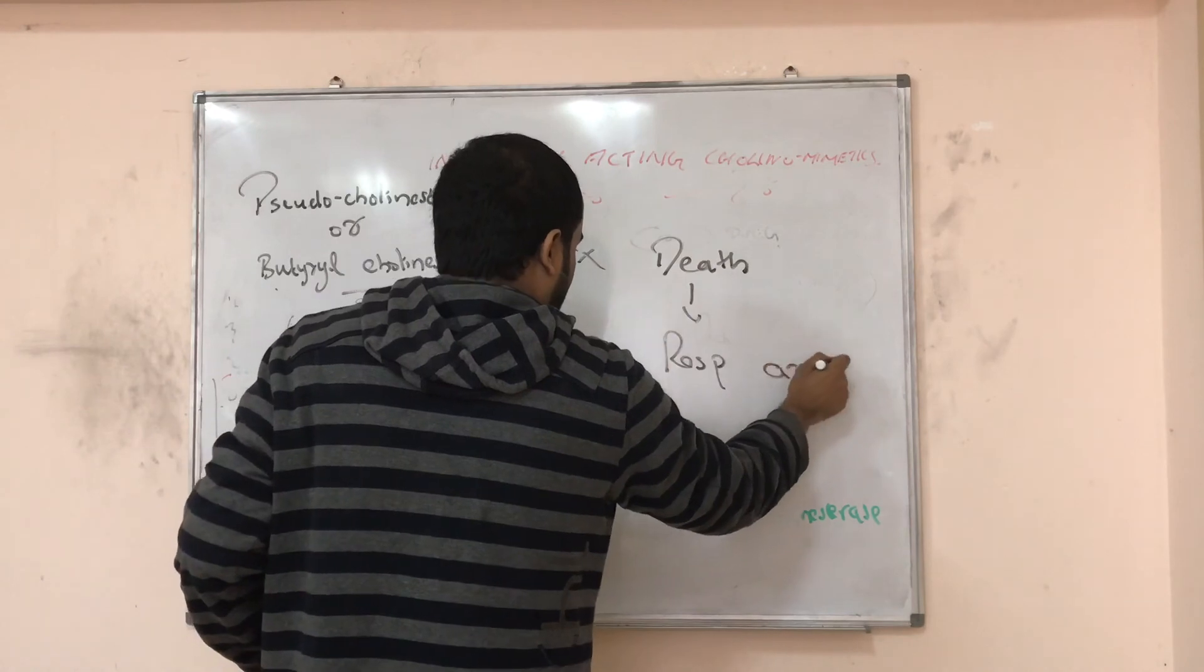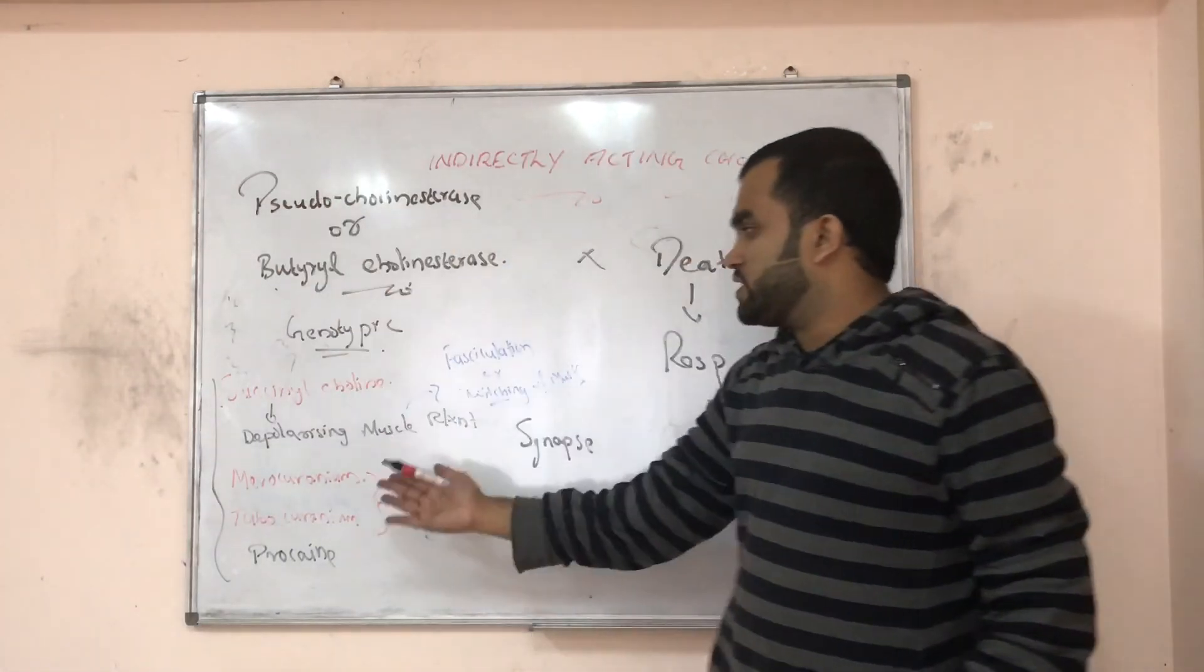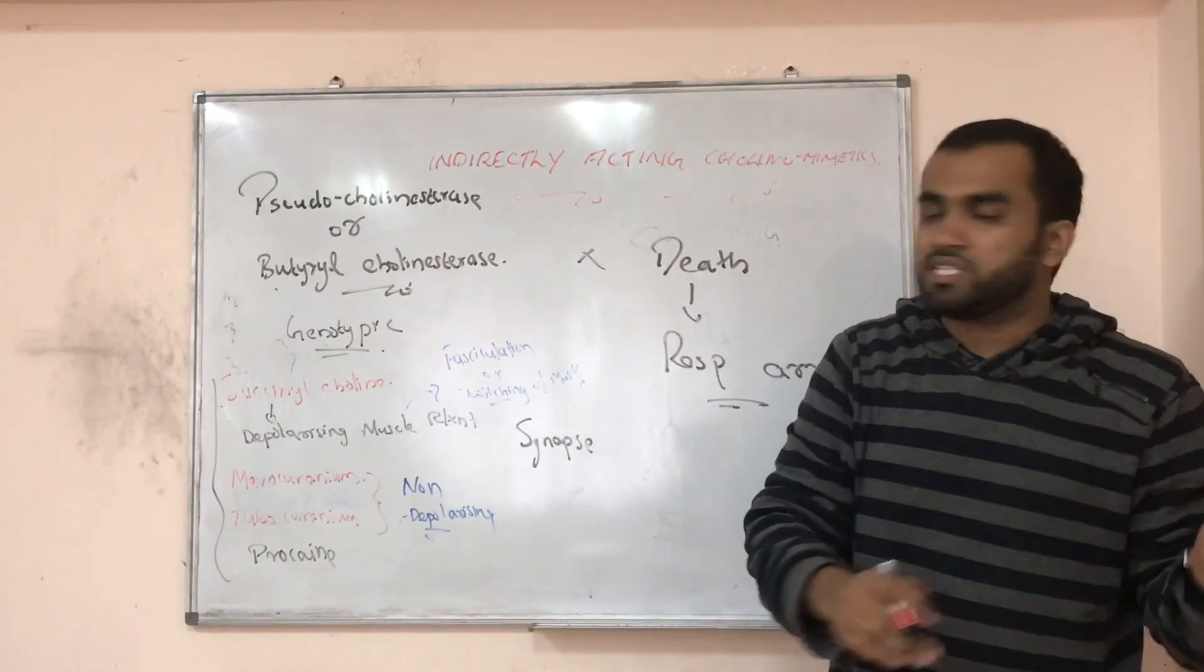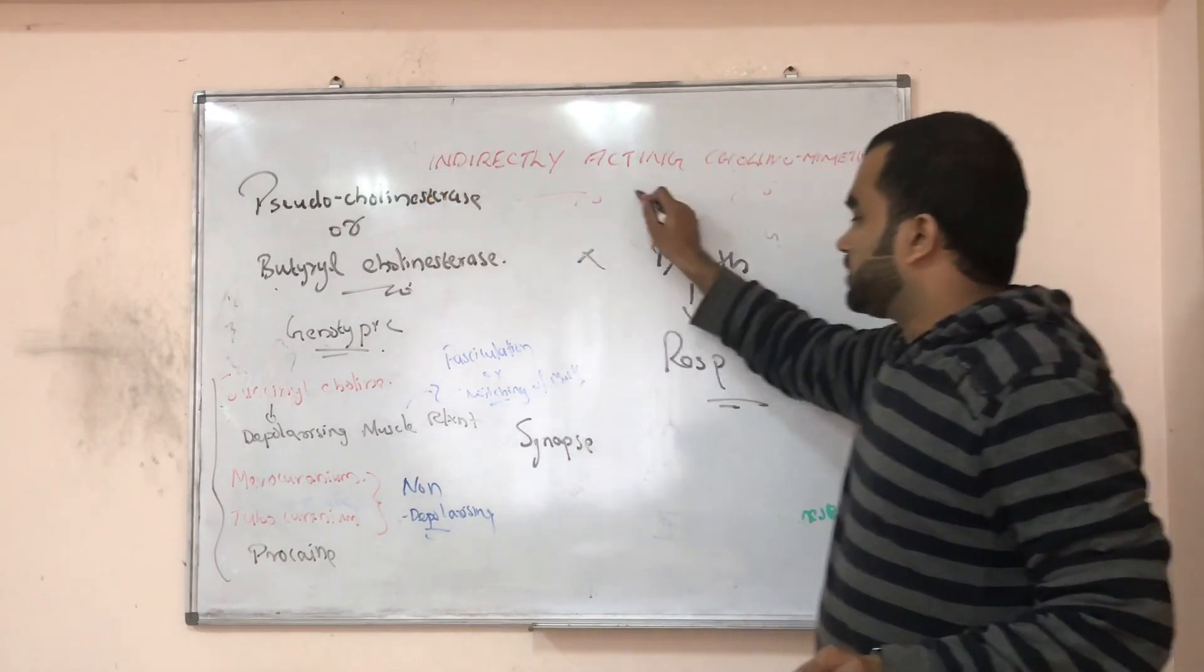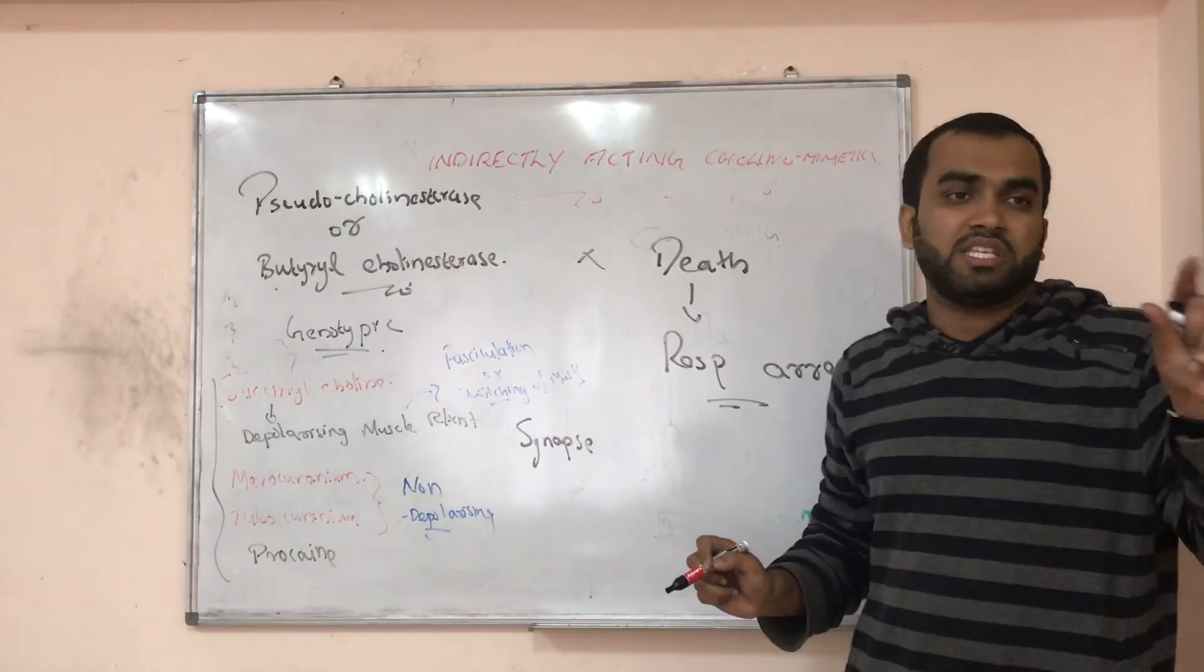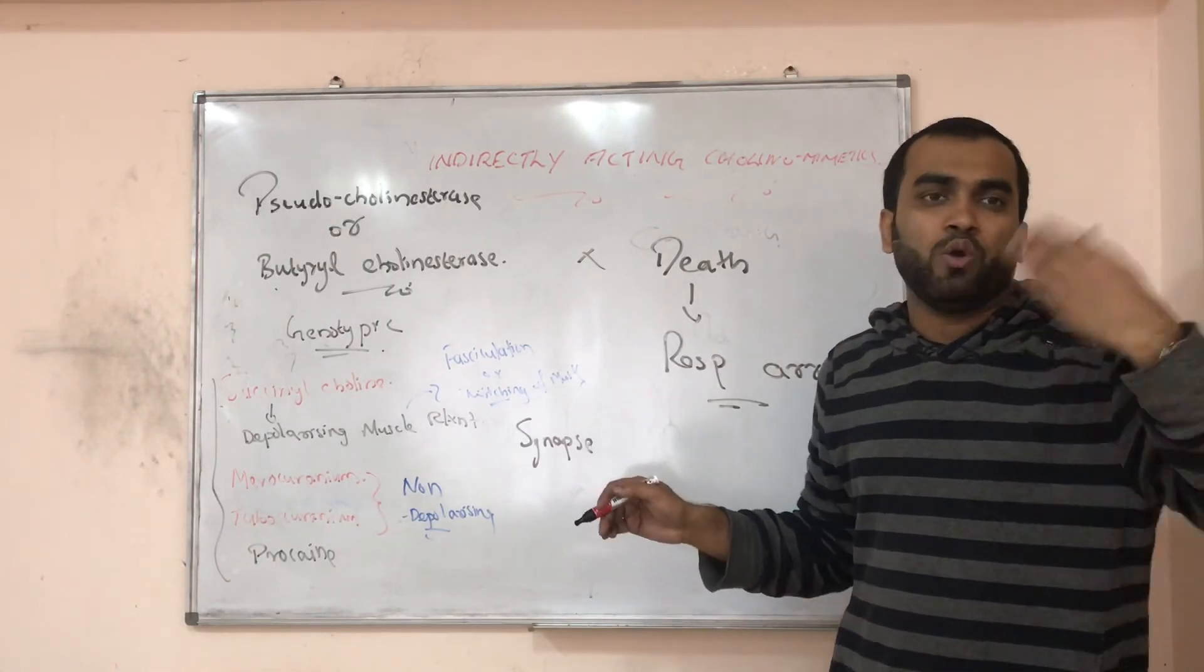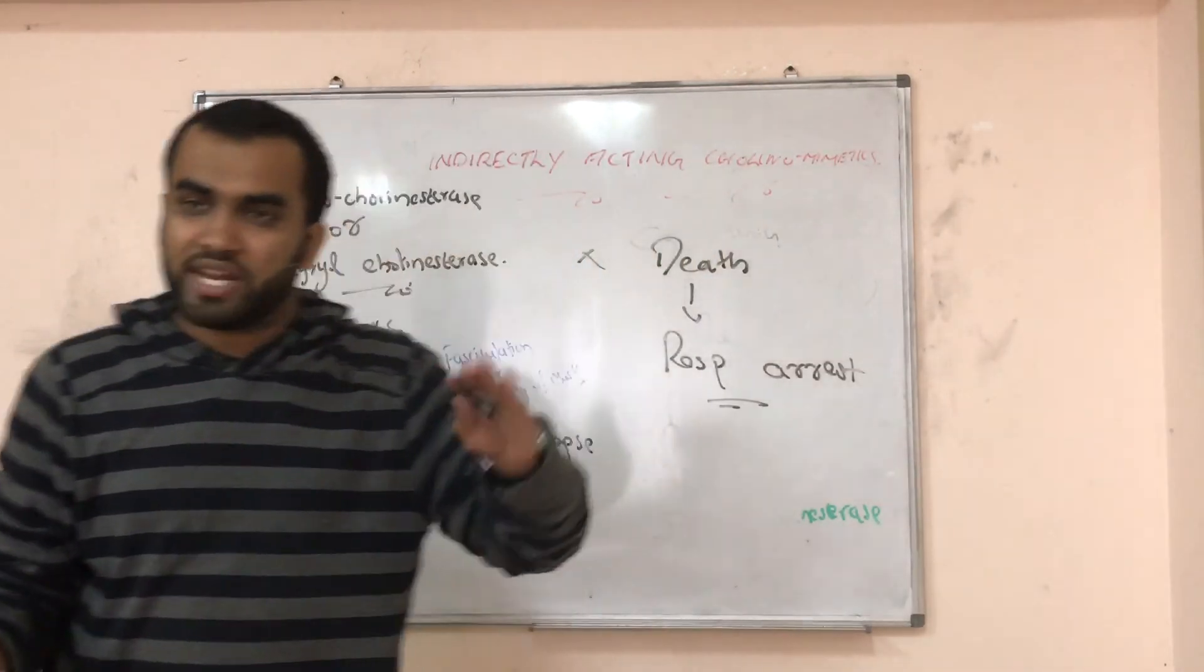So if there is no this enzyme, the person will lead to death because of respiratory arrest. So this enzyme is very important. I just notified here the importance of pseudocholinesterase or butyrylcholinesterase. And you know now what is the difference between acetylcholinesterase and butyrylcholinesterase. So we were talking about indirectly acting means they will block which enzyme? That acetylcholinesterase. That is eating up our acetylcholine. So if they block it, you will have more acetylcholine in the synapse. So you will get more effect.